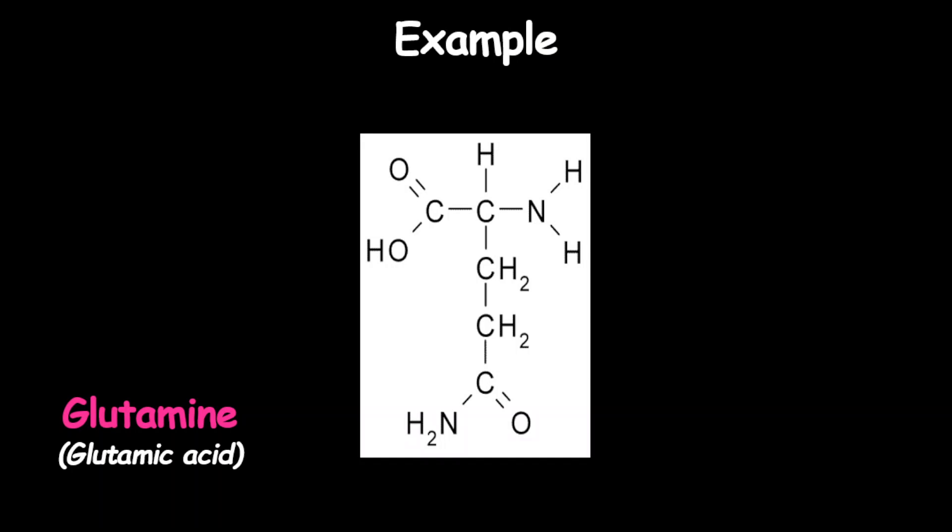Now let's look at an example. Here we have glutamine — depending on your pronunciation, it is glutamine or glutamine, and its full name is glutamic acid. Looking at this structure, let's identify the three groups. If you notice carefully, we have two groups that look alike, which is the NH2 — those are the amino groups.